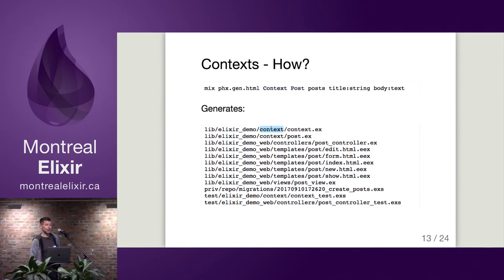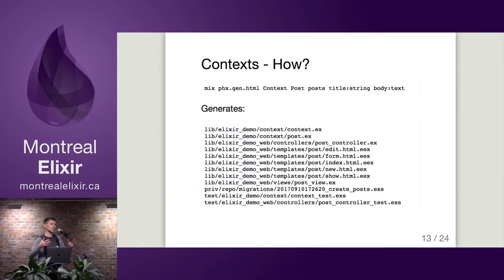This is the key thing that gets generated - the context module. This is what you're calling, not the post schema struct or module that was generated. It also generates some nice tests, better than the tests that were in 1.2.